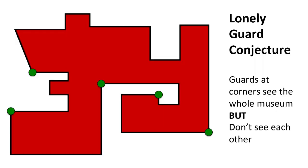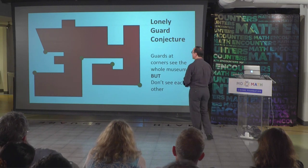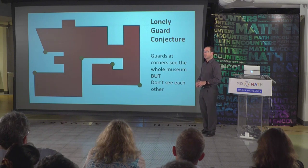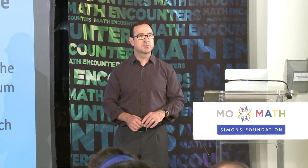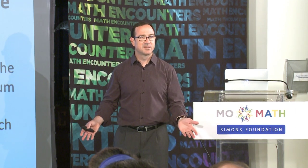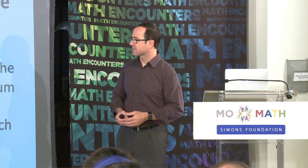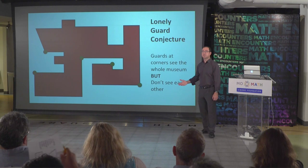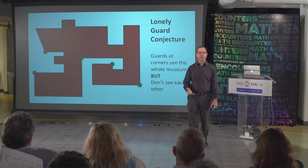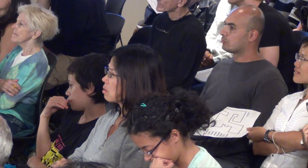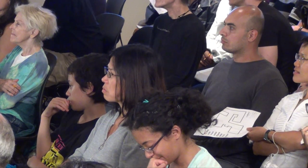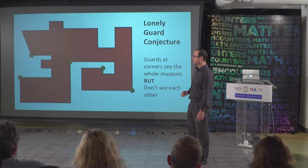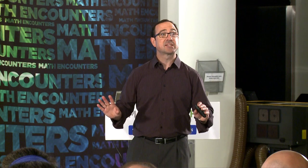Here's a question I'll leave you with — I call this the lonely guard conjecture. I put five points on here where you can convince yourself that the whole gallery is being covered by these five points. But no guard sees another guard — they're lonely. Does this always have to happen? I don't know. And I posed this to people who work in this area of combinatorics, and they don't know either. Can you make a polygon and put guards in locations so that the whole gallery is viewed but no guard sees another? That's something for you to think about.